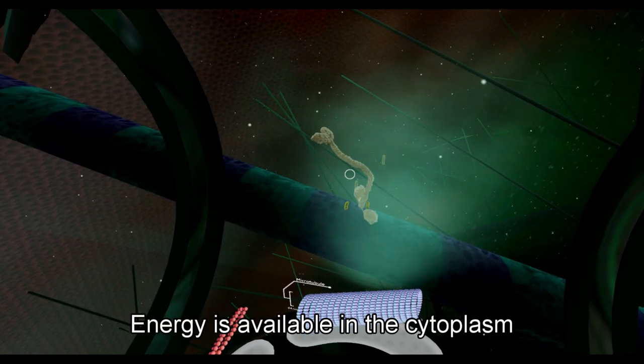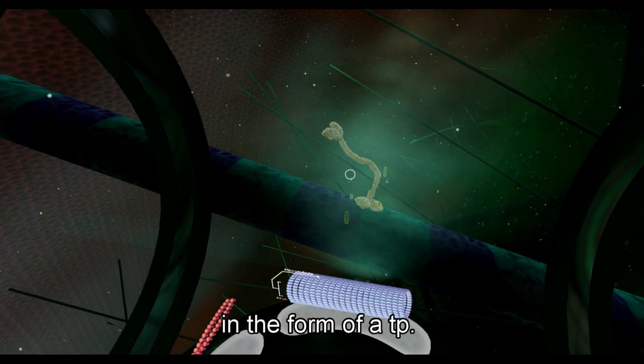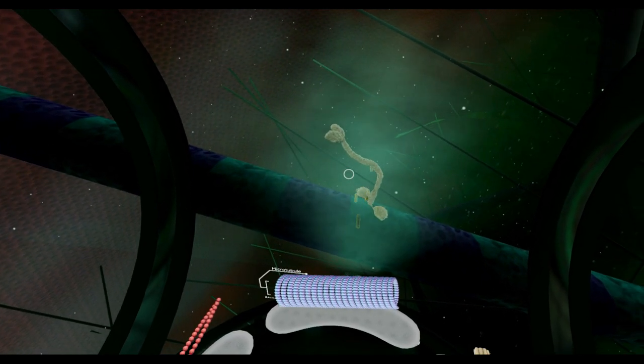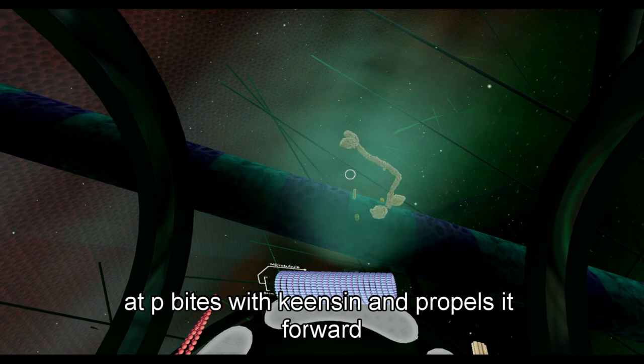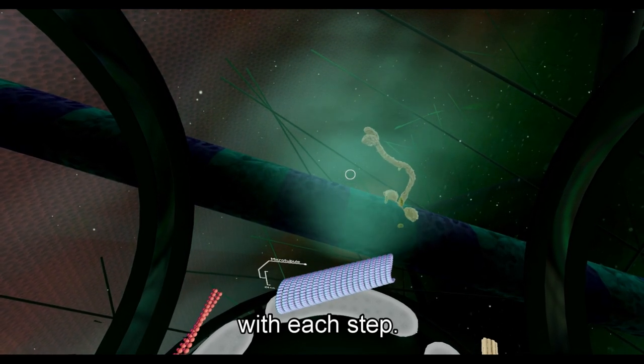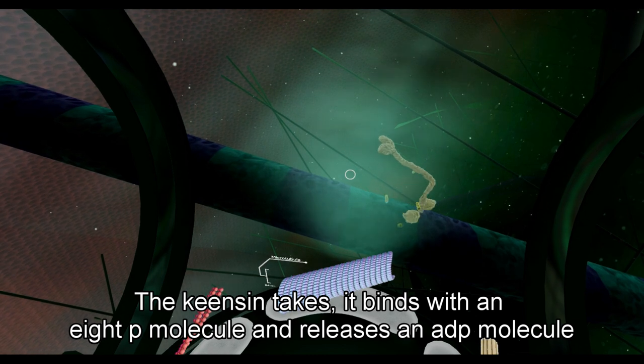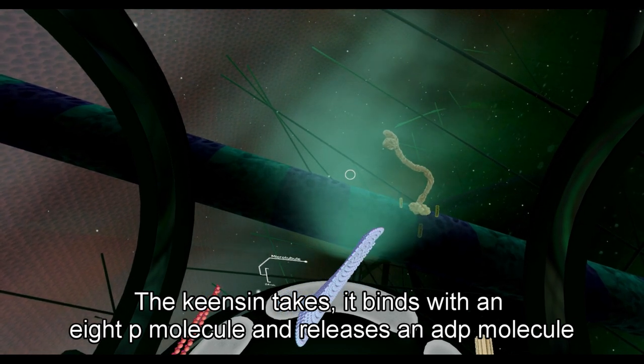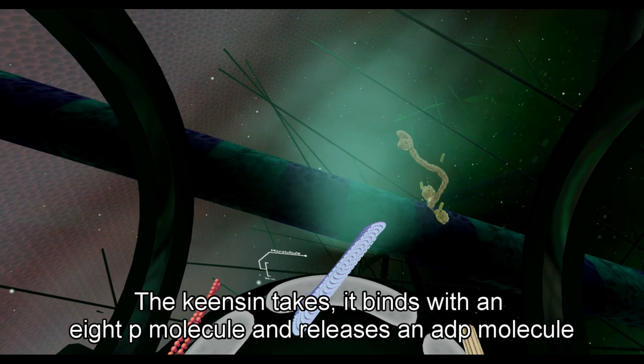Energy is available in the cytoplasm in the form of ATP molecules. ATP binds with kinesin and propels it forward. With each step the kinesin takes, it binds with an ATP molecule and releases an ADP molecule.